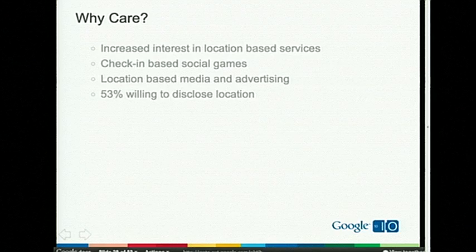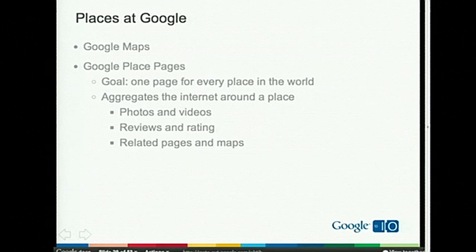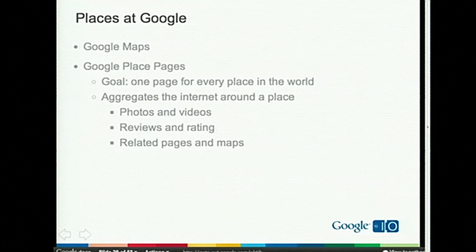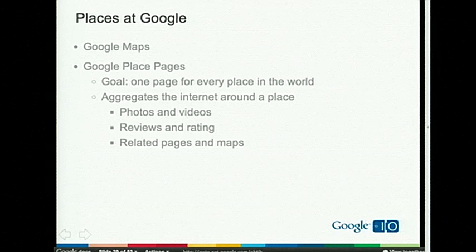What is Google doing in this space? We've been dealing with places since we started working on maps in 2004 and 2005. We process a very comprehensive database of places to build both our map tiles and our search indexes. But until recently, we didn't look at this database from the perspective of a unified notion of places. We had local listings, points of interest, and geographic entities, but we didn't look at them as a single concept.